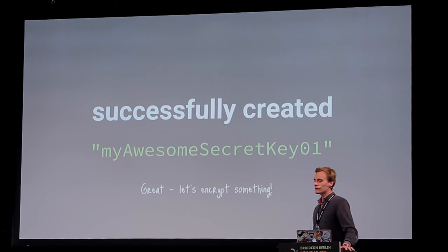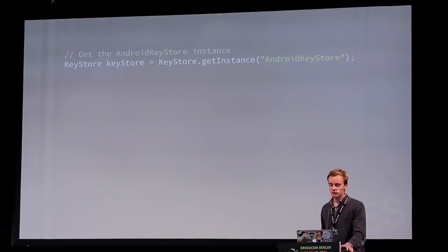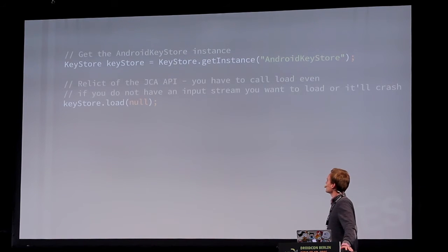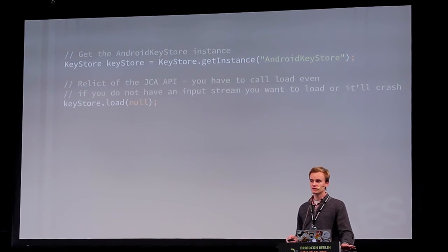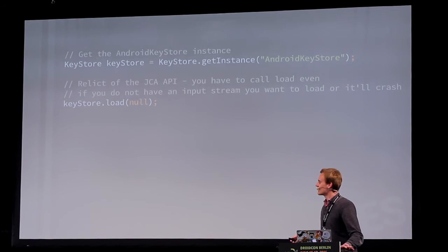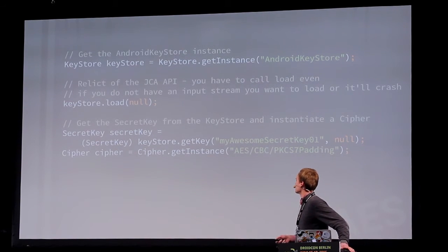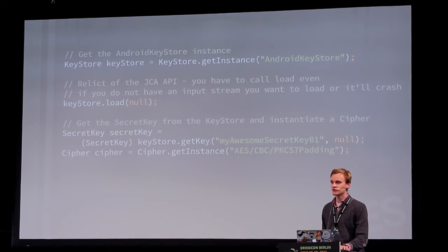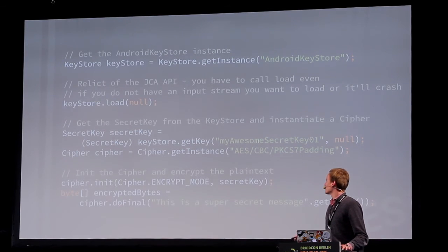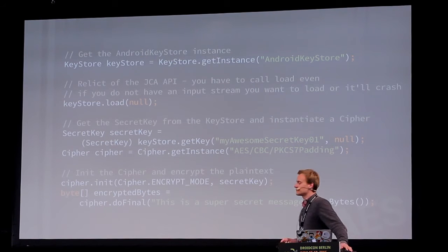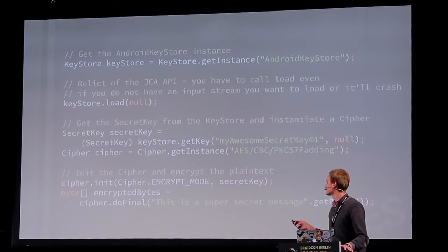To encrypt something, first get an instance of the KeyStore with 'AndroidKeyStore', then call keyStore.load() — this is a relic of the JCA API even if there's no input stream. Then get the secret key from the KeyStore, instantiate a Cipher with the parameters specified in the builder, initialize the cipher, encrypt the plaintext, and finally have the encrypted bytes. Decryption is more or less the same — just initialize the Cipher in DECRYPT_MODE.